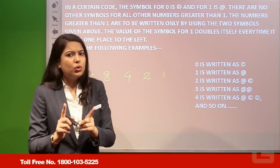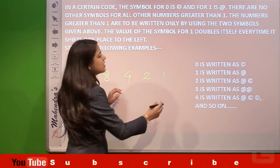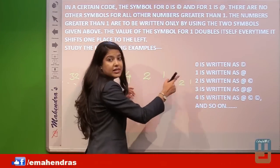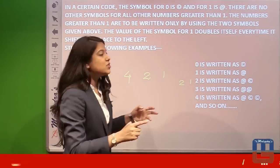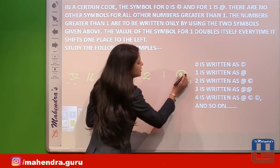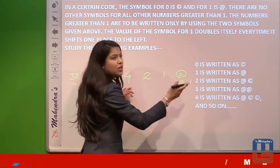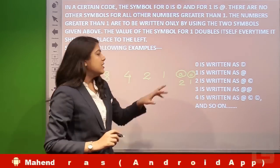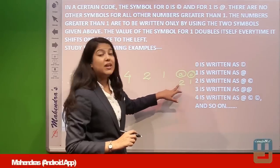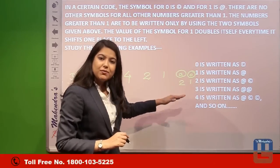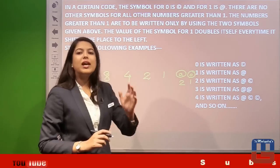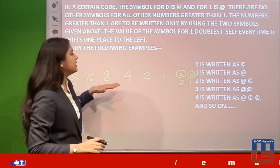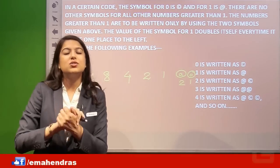So the rule is: the digits from our series that we ARE using get coded as @ (at-the-rate), and the digits we are NOT using get coded as © (copyright). Remember the series: 1, 2, 4, 8, 16, 32, 64. The same logic applies for 3, 4, and all numbers going forward.